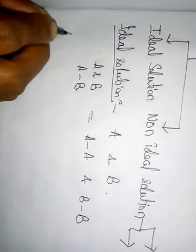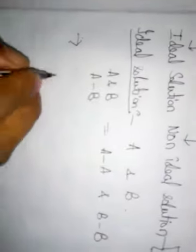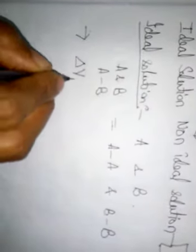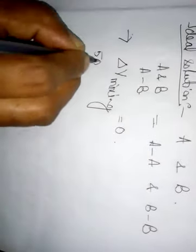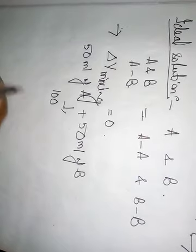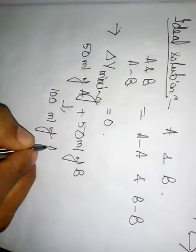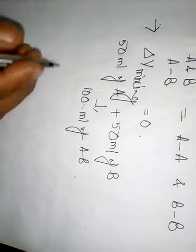The characteristics of ideal solutions are: first, there is no change in volume on mixing the two components — that is, ΔV mixing = 0. For example, if 50 mL of liquid A and 50 mL of liquid B are taken, then exactly 100 mL of A-B solution is formed.